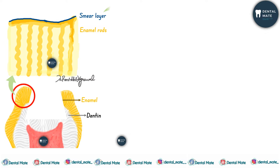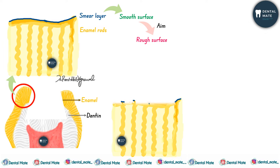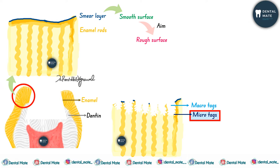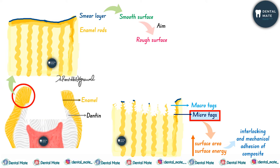After tooth preparation we have the smear layer and the enamel rods on a smooth surface, but our aim is to obtain a rough surface. This is achieved by the formation of macrotags and microtags — microtags are very important for adhesion. These tags increase the surface area and surface energy at the interface between the restorative material and the tooth surface, enabling mechanical adhesion of the composite.